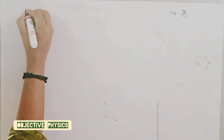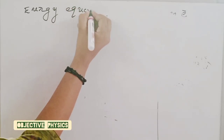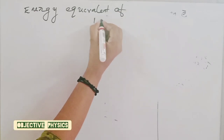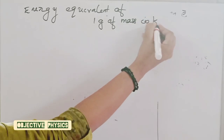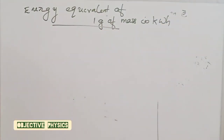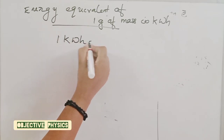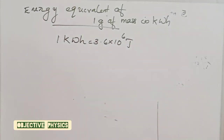Next question: express the energy equivalent of 1 gram of mass in kilowatt hours. We know that 1 kilowatt hour is equal to 3.6 × 10⁶ joule.